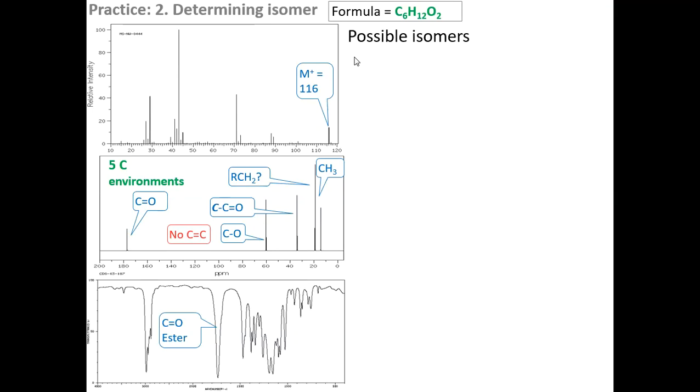Kia ora. Here's our second example. We have a formula of C6H12O2, and we know it's an ester.